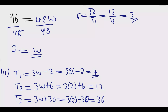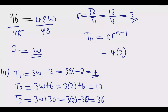Now we write the nth term. Using tn = a · r^(n−1), with a = 4 and r = 3, the nth term is: tn = 4 × 3^(n−1). This is the answer to Roman numeral 2.